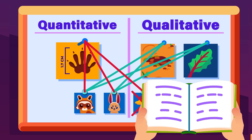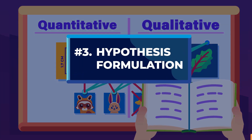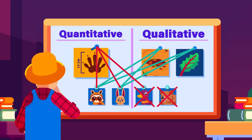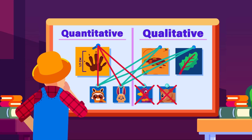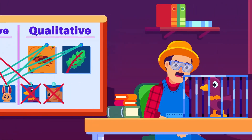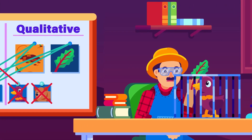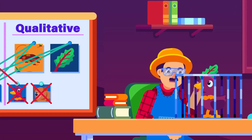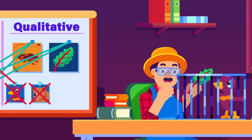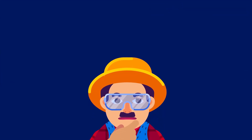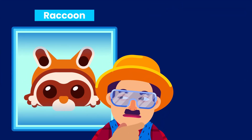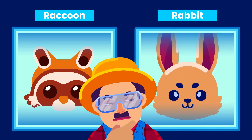Now, on to the third step: formulating the hypothesis. A hypothesis is a simple, unconfirmed statement based on an observation. It should be testable and falsifiable, meaning that it can be disproved during the experiment. Upon observing the eaten plants, you might deduce that animals such as raccoons or wild rabbits are the likely culprits.